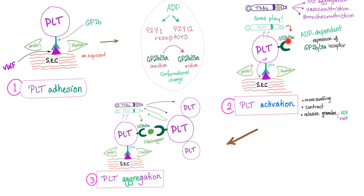Now we have an active GP2B3A receptor — this platelet has one, this platelet has one — and it helps with platelet aggregation. When you have platelet aggregation, you are ready for the next step, which is blood coagulation. GP2B3A inhibitors will inhibit these receptors; therefore, no platelet aggregation; therefore, no blood coagulation.